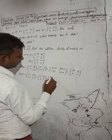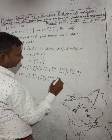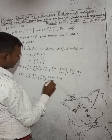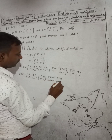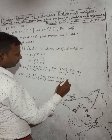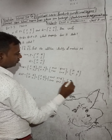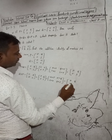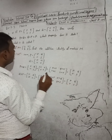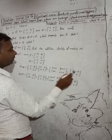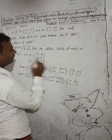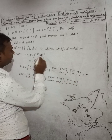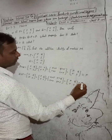So 0 plus p is p, 0 plus q is q, 0 plus r is r, and 0 plus s is s. So what we see here is we got [p, q, r, s]. This is the same [p, q, r, s], meaning Q plus P also equals P.